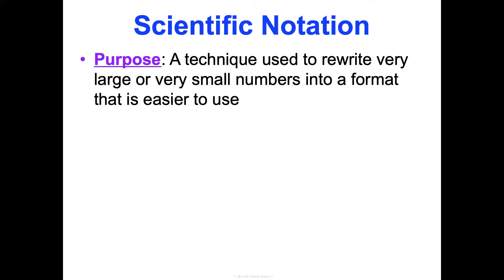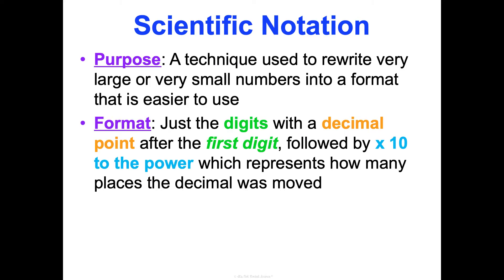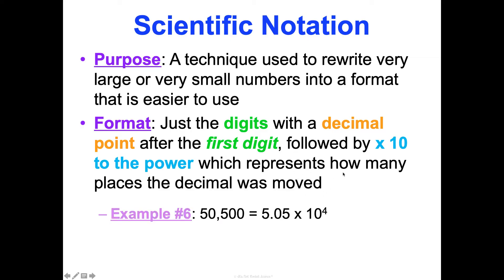Scientific notation takes really big and really tiny numbers and puts them in a format that's easier to read. The format is: the digits with a decimal point after the first digit, followed by times 10 to the power, which represents how many places the decimal was moved. For example, 50,500 is the same thing as 5.05 times 10 to the fourth.